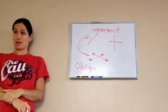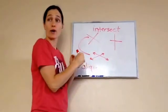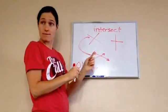And oblique lines do not form square corners. Do you see that? They just cross. This one, the lines crossed and it formed perfect square corners.